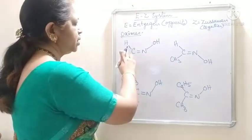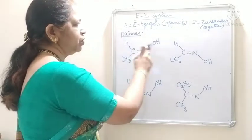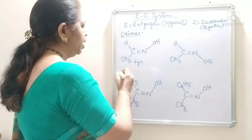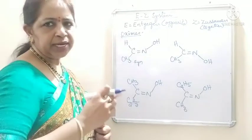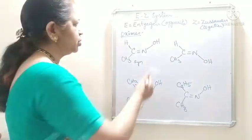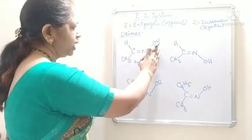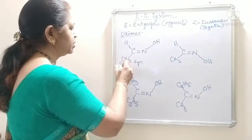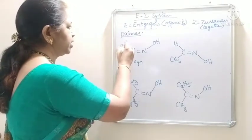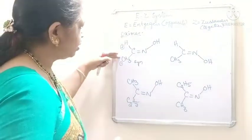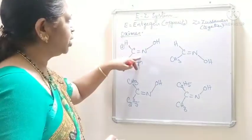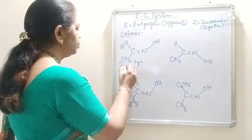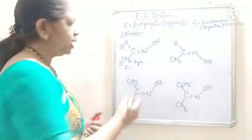In this, it is a syn compound because H and OH are lying on the same side of the double bond. It is syn acetaldoxime. Now to assign EZ configuration we have to give the priorities. OH is on one side. CH3 gets the first priority and hydrogen gets the second priority. This OH and higher priority groups are on the opposite side of the double bond. So, it is E configuration — E acetaldoxime.